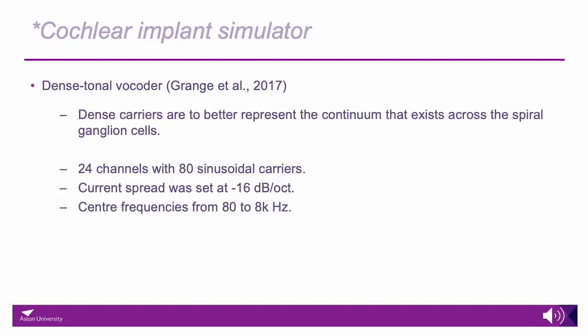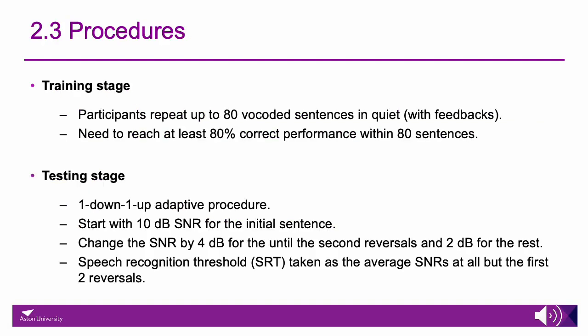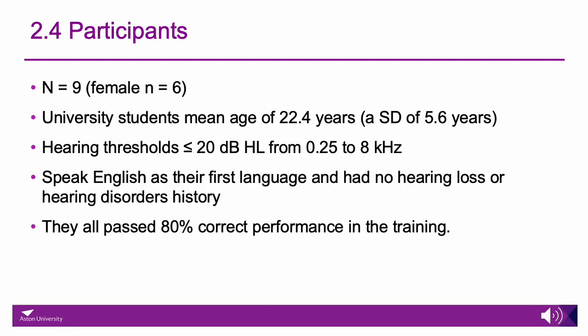This shows the parameters of the cochlear implant simulator that we used. To test the participants, we ensured they could reach at least 80% correct in the training stage within 80 sentences, after which they completed a one-down-one adaptive procedure to determine the speech recognition threshold as their outcome measure. We had nine participants with normal hearing join the study.